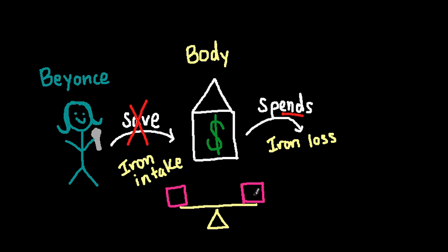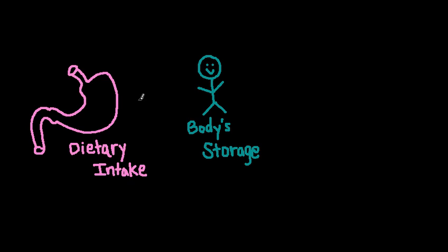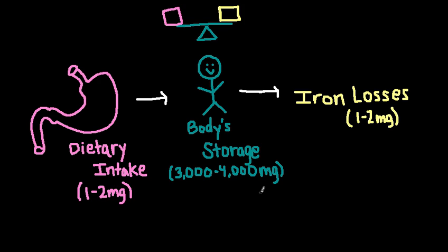As I continue to discuss how our bodies consume and take in iron, keep this analogy in mind. Let's move on to iron metabolism. Iron absorption is highly regulated, as are most things in our body. The normal amount of iron stored in our body is about 3,000 to 4,000 milligrams. And as mentioned in the last video, most of it is held in the hemoglobin. 60% of the iron in our body is in our red blood cells. This iron is constantly recycled and reused.